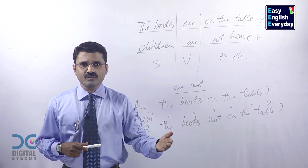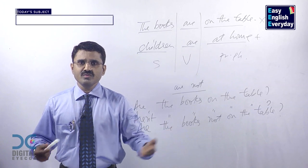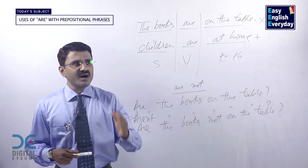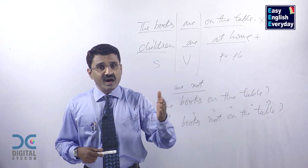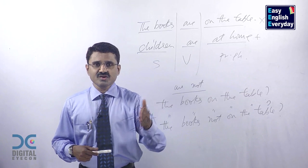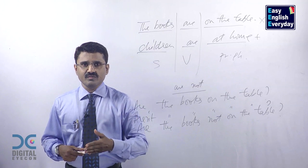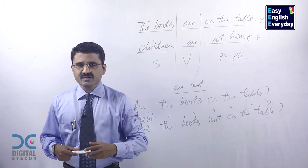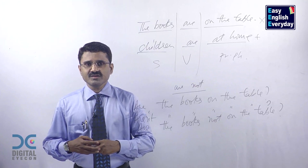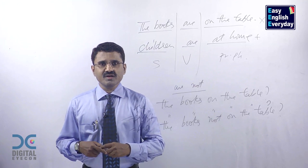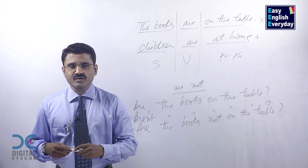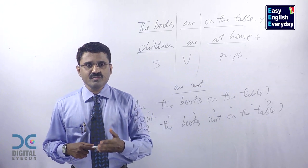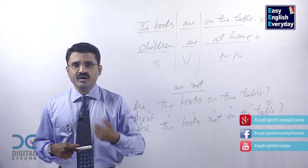Yes, children are at home. No, children are not at home. Are children at home? Aren't children at home — negative form. Repeat: Children are at home. Children are not at home. Are children at home? Aren't children at home.